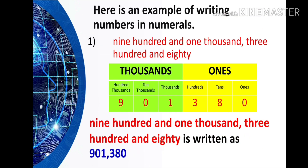Here is an example of writing numbers in numerals. First example: 901,380. Zero in the ones, eight in the tens, three in the hundreds, and so on. 901,380 is written as 901,380.